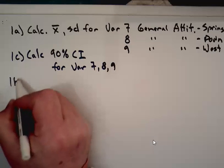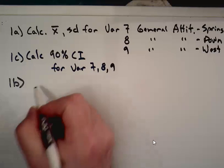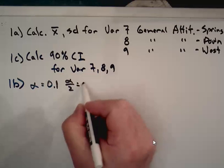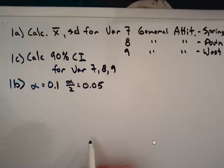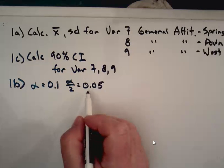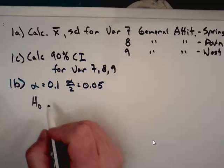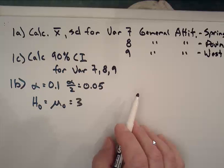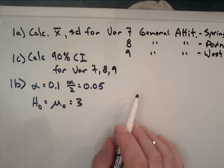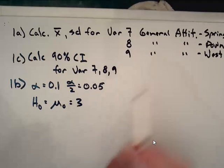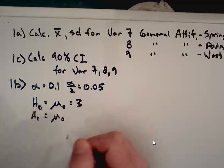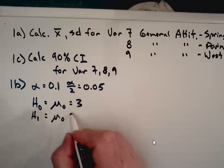Okay, in 1b, we're asked to do our hypothesis test. We're told our alpha, our significance level, is 0.1, which means alpha over 2 is 0.05. Might come in handy if we're looking up t values, because we know it's a two-tailed distribution. Okay, in your work, they state the null hypothesis is going to be that the hypothesized mean is equal to 3.0. And for these general attitudes, 3.0, I believe, means neutral. They don't feel very strongly, one way or another, about the malls. And the alternative hypothesis is that the hypothesized mean is not equal to 3.